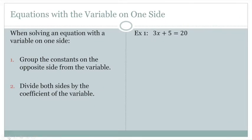On this first slide we're looking at an equation that has a variable on just one side. When solving an equation with a variable on one side, the first thing we'd like to do is group the constants on the other side from the variable. So we see we have this constant 5, and if we subtract it from both sides of the equal sign it'll cancel from the side with the variable.